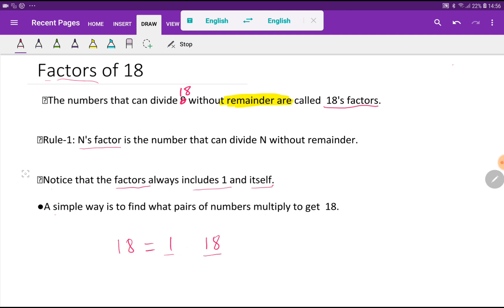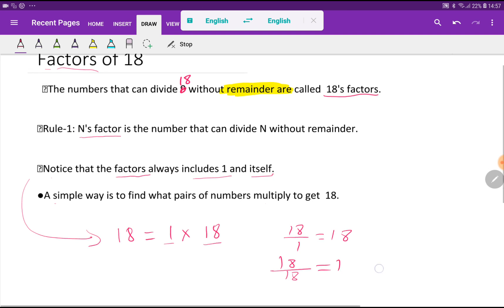A simple way is to find what pairs of numbers multiply to get 18. If I multiply 1 times 18, then I will get 18. That is why 1 is a factor of 18, and 18 itself is also a factor of 18. If you divide 18 by 1, you get 18. If you divide 18 by 18, you get 1.